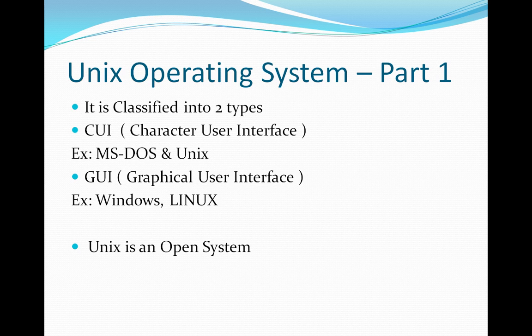UNIX is called an open system or open source. Open system means the source code is open and any user can modify the UNIX source code according to their requirements or ideas. They can develop and produce their own operating system, which is why we get many flavors of UNIX.